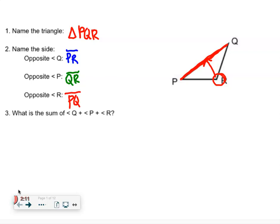Number three says, what is the sum of angle Q plus the measure of angle P plus the measure of angle R? Well, we know that all three of our angles in a triangle have to add to what? 180 degrees.